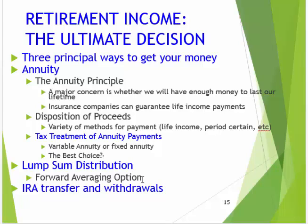There are some tax things you could do — it's called the forward averaging option. If I remember right, that's 5, 7, or 10 years is how long you can average those taxes out. And of course, you can ultimately transfer to an IRA and then do withdrawals from the IRA. How much of that is taxable? All of it, because it's all coming from pre-tax income.